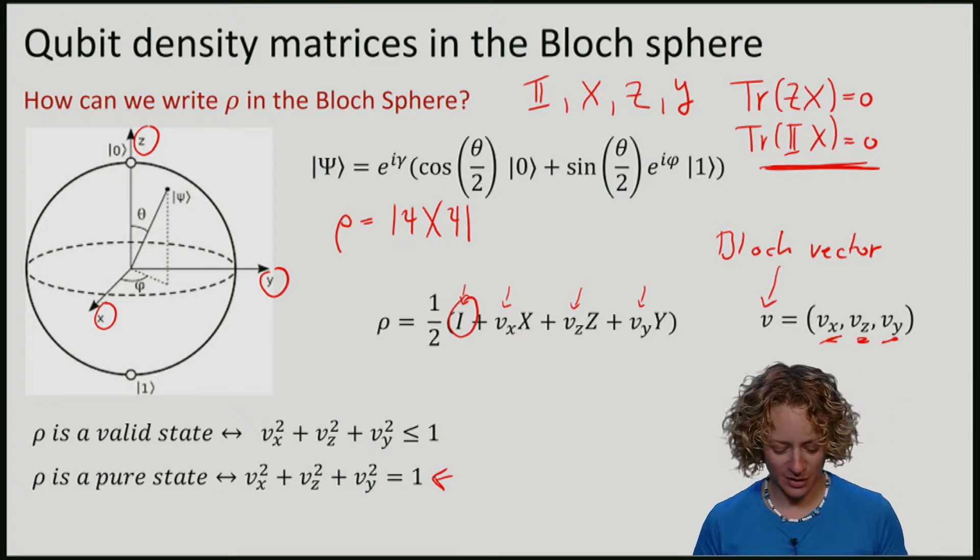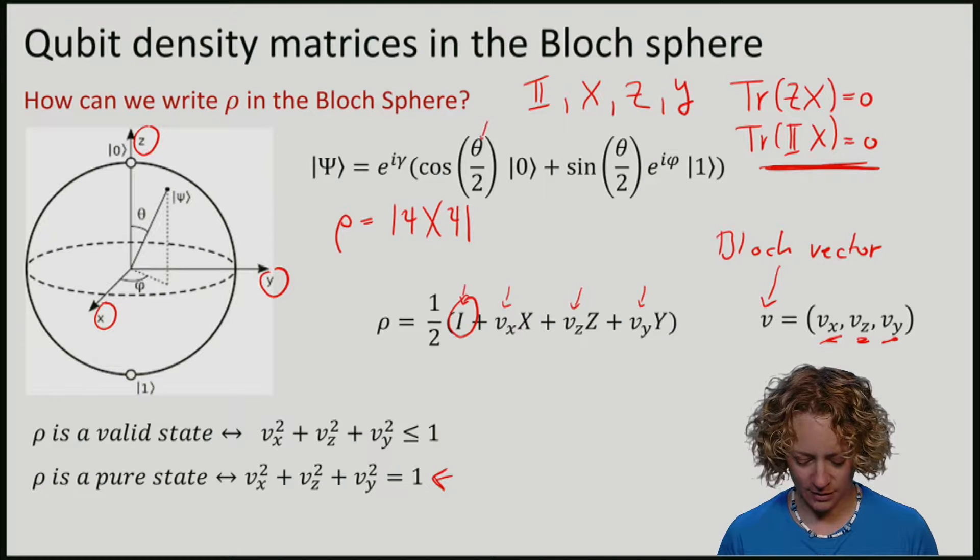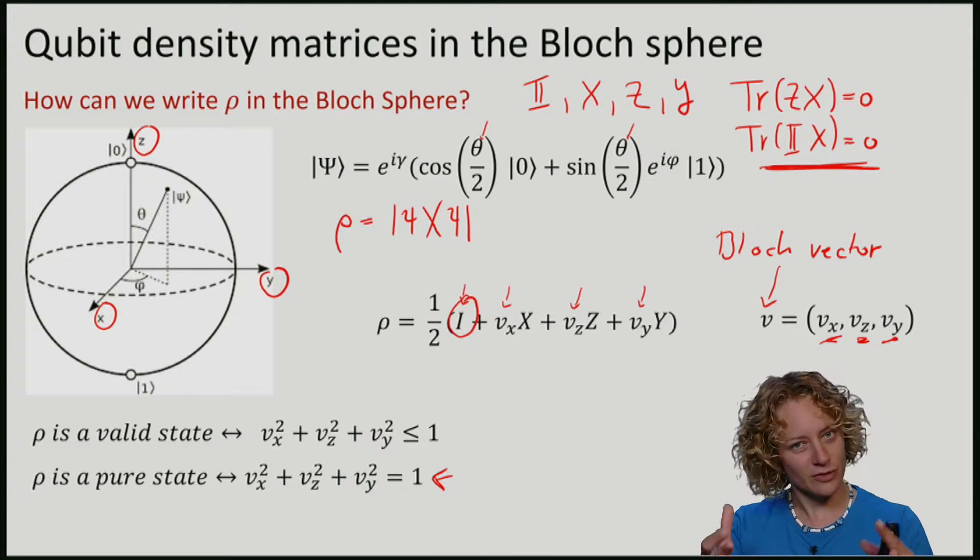You could also see this here, because we had only parameterized the angles, but we had only parameterized points on the surface of the sphere.